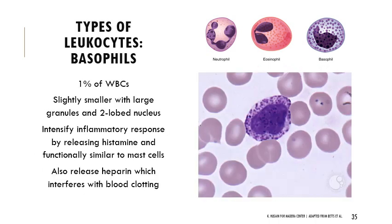Basophils are only about 1 percent of white blood cells, slightly smaller than the other two types, with larger granules and a nucleus with only two lobes. They are responsible for intensifying the inflammatory response by releasing histamine — unlike eosinophils, which produce antihistamines. They are similar in function to mast cells. They also release heparin, which stops blood clotting — keep heparin in mind when we talk about hemostasis.